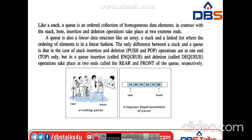Elements are removed in the order in which they were added — the first element inserted is deleted first, that is why we call it First In First Out. Technically, a queue is an ordered collection of homogeneous elements where insertion and deletion can be done at two ends. The key difference between stack and queue: in stack, push and pop operations are done at only one end (the top), whereas in queue, insertion (enqueue, NQ) and deletion (dequeue, DQ) are done at two ends — rear and front respectively.